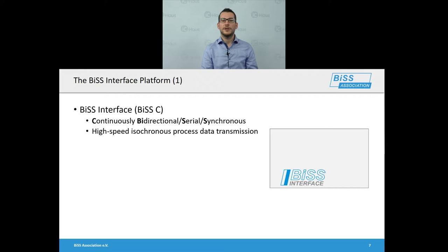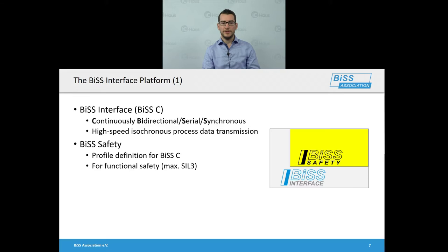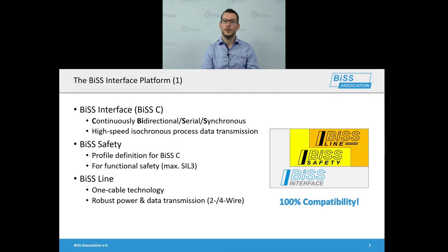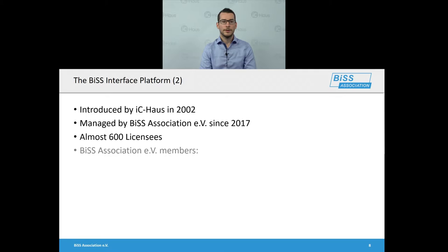A short overview about the BiSS interface platform. When we talk about the BiSS interface we talk about the BiSS-C protocol. BiSS stands for a serial synchronous interface that enables continuous bi-directional data transmission. It is typically used in motion control and motor feedback applications because it enables high-speed isochronous process data transmission. BiSS Safety is a profile definition that enables using the BiSS interface in safety-critical applications up to SIL3. BiSS-LINE is the one-cable technology, enabling robust power and data transmission over only two or four wires. Importantly, all these aspects are fully compatible with each other.